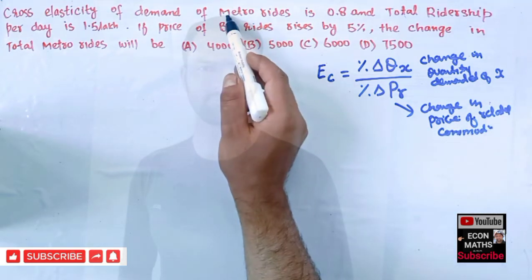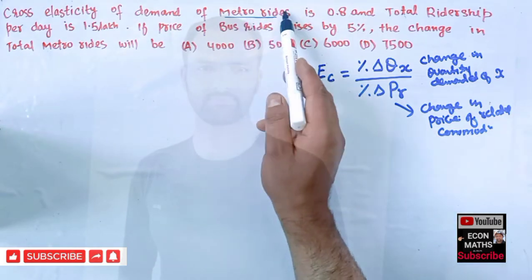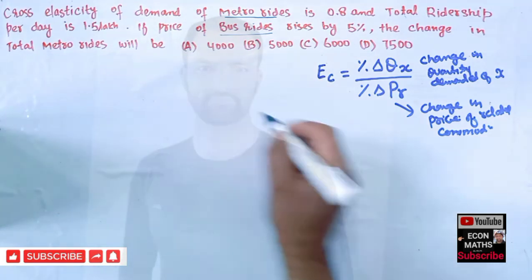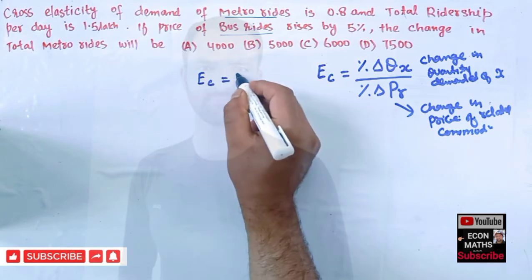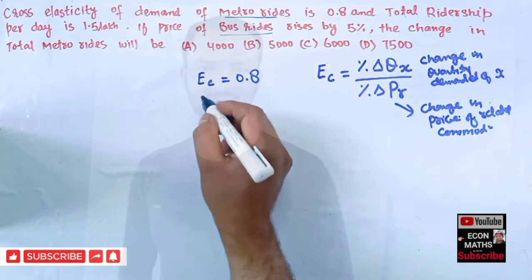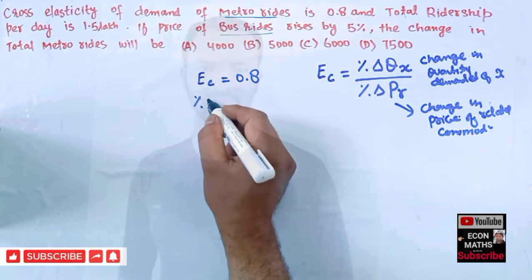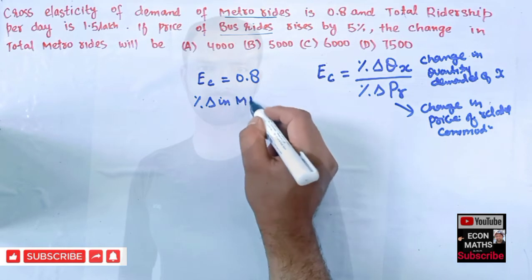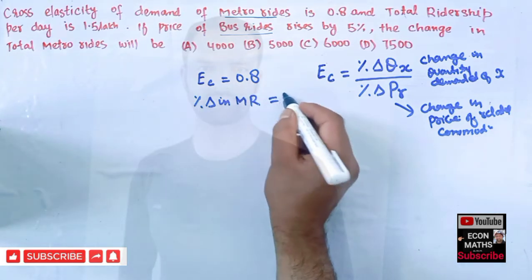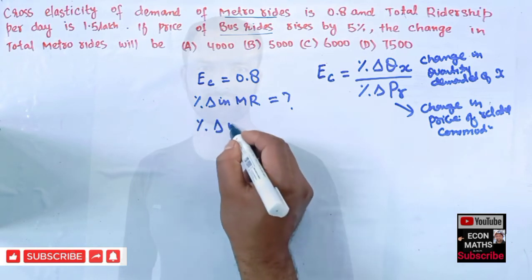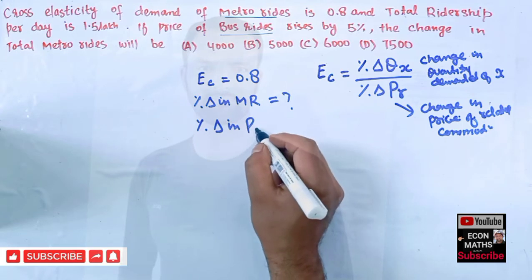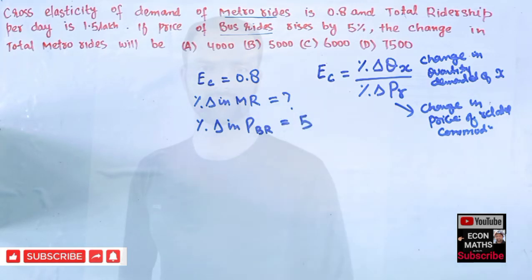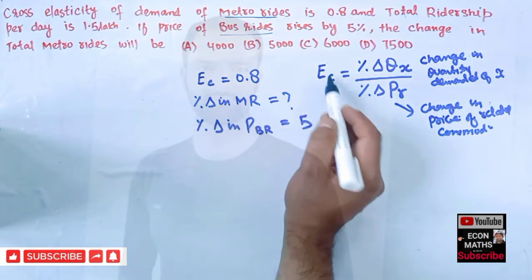We have two services here: metro riders and bus riders. The cross price elasticity of demand is given as 0.8. We need to find the percentage change in total metro riders, and the percentage change in price of bus riders (BR) is given as 5%.